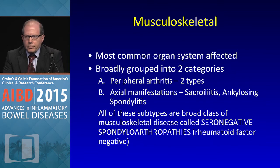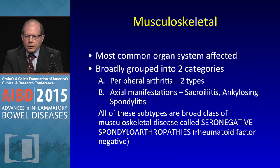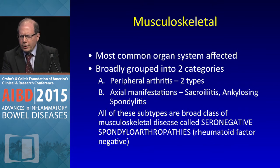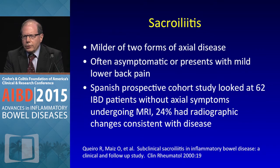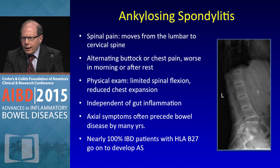For musculoskeletal manifestations, we have axial disease and two forms of peripheral arthritis — sacroiliitis and ankylosing spondylitis. These are part of a broad class of seronegative musculoskeletal diseases with negative RF factor. Sacroiliitis is more mild and often asymptomatic with lower back involvement. A Spanish study looking at 62 IBD patients without axial symptoms found 24 percent had MRI changes consistent with disease.